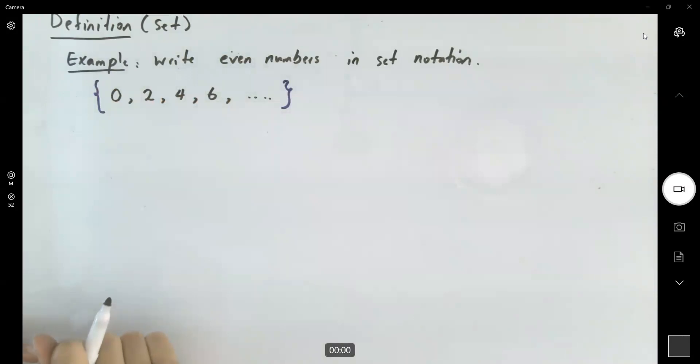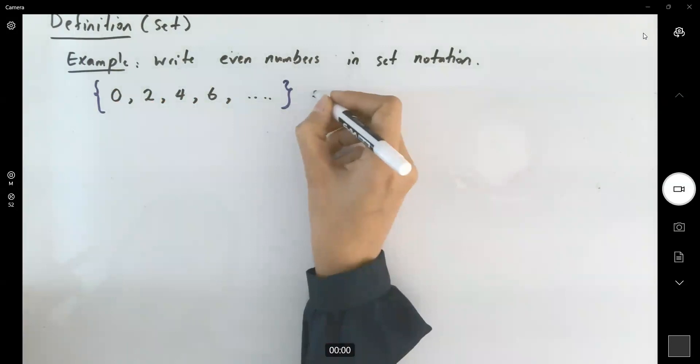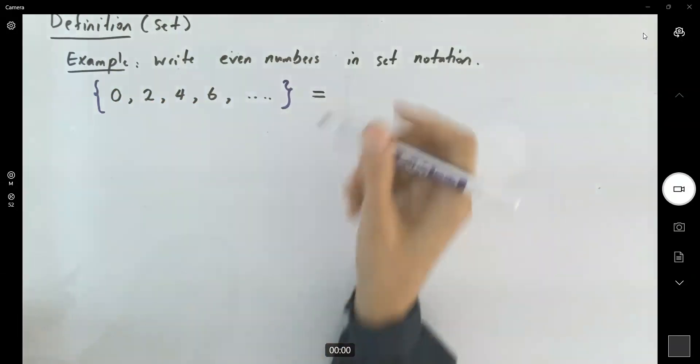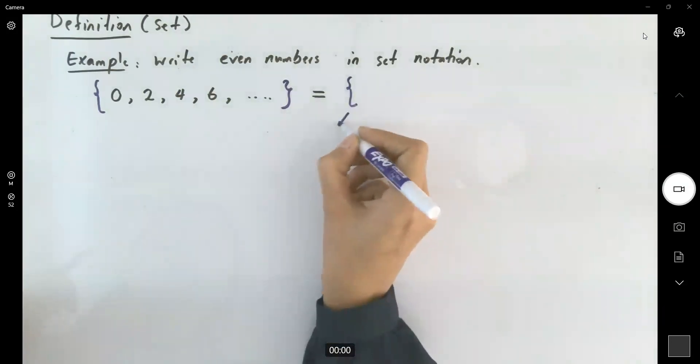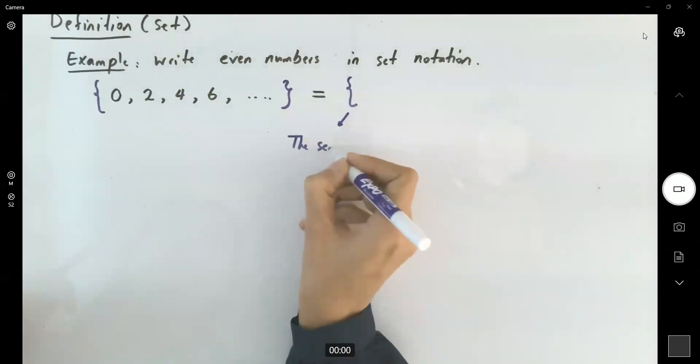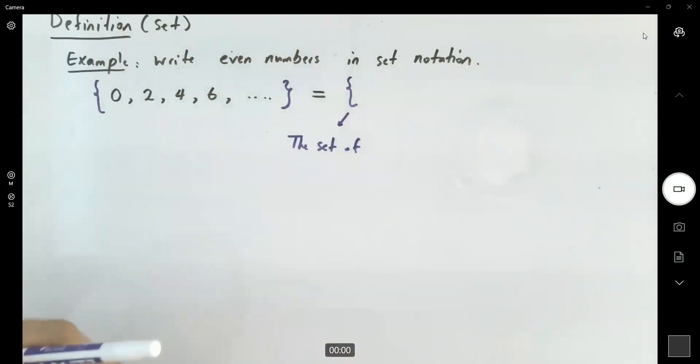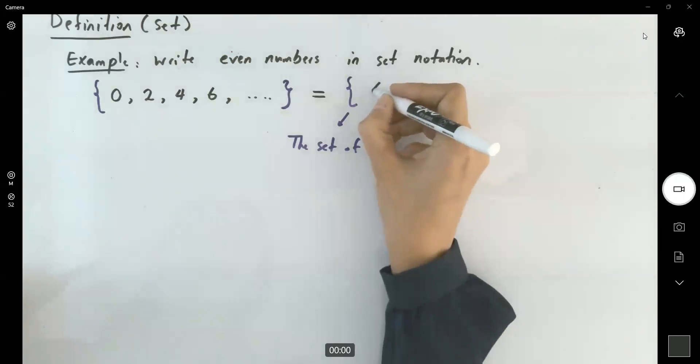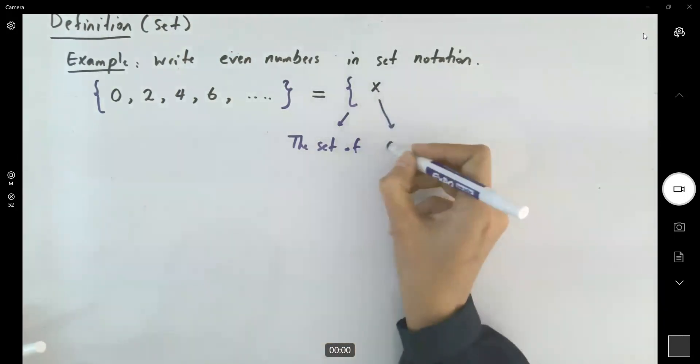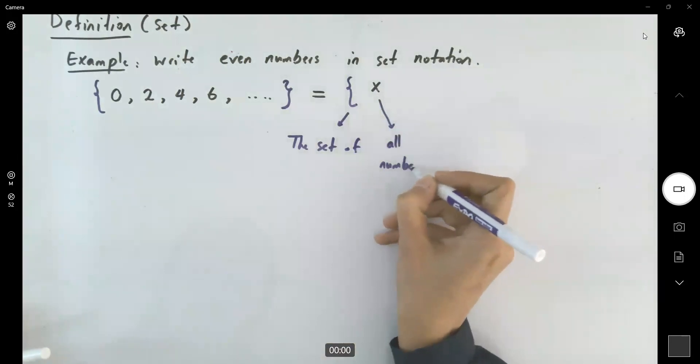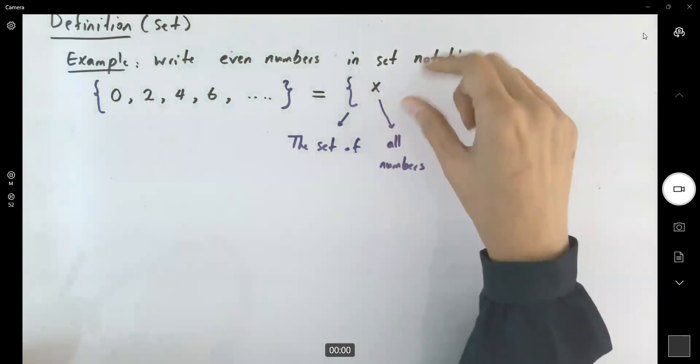More professionally, write it as the set of - step by step. The set of what? All numbers like x. So, the set of all numbers. What numbers?